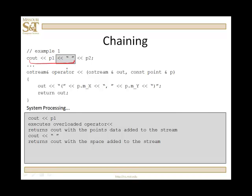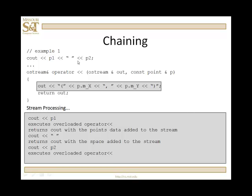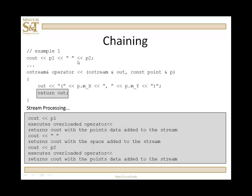Again, from what I've got here, I now have a cout. Which then is going to operate with that streaming operator. So, we cout p2. And that executes the overloaded operator less than less than, and that returns cout with the points data added to the stream.